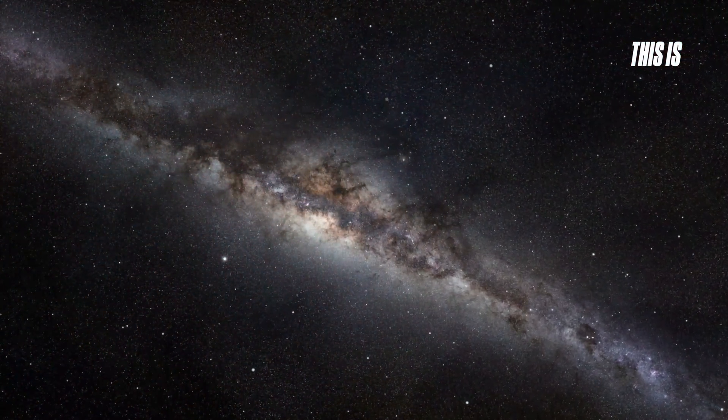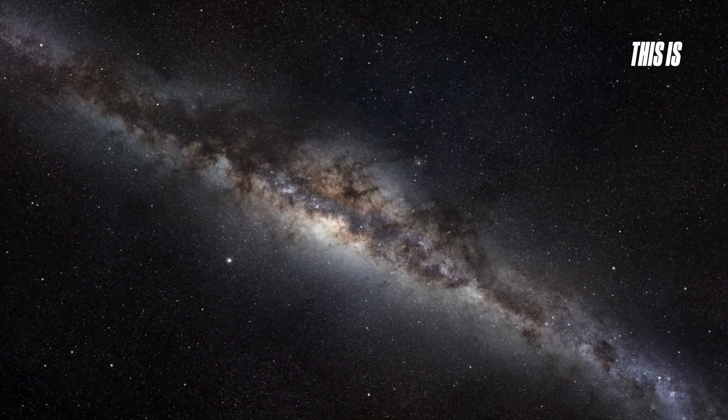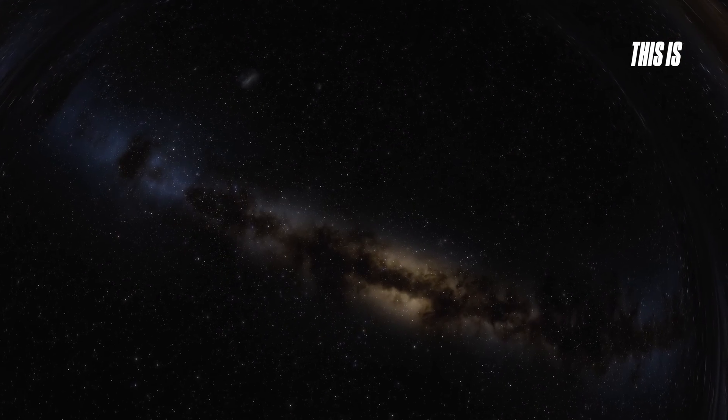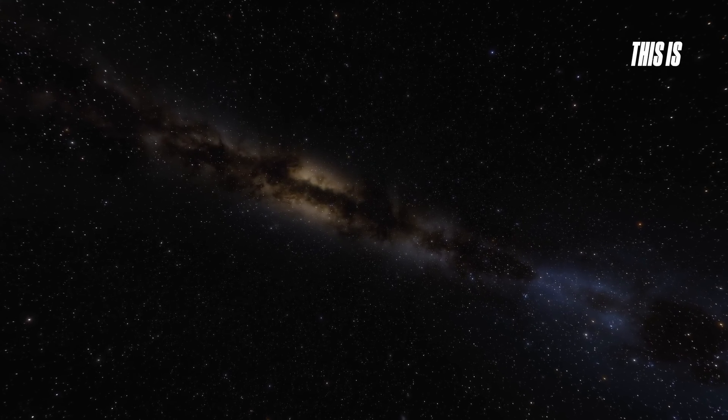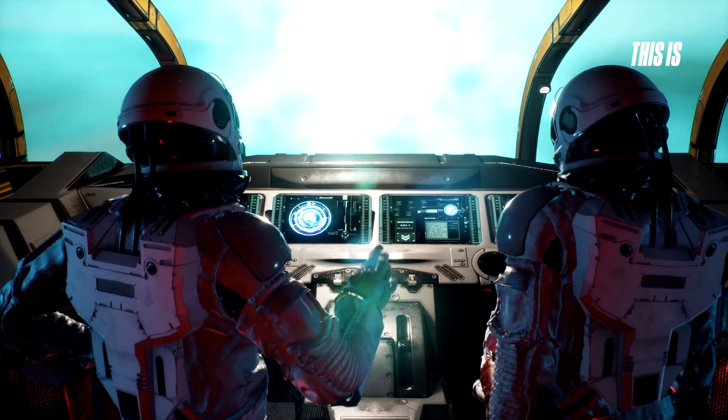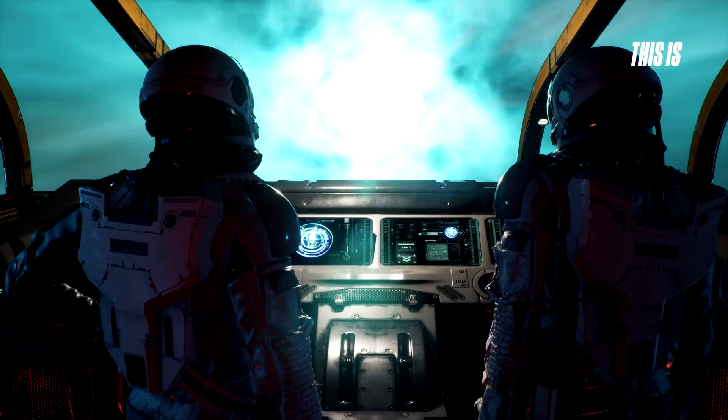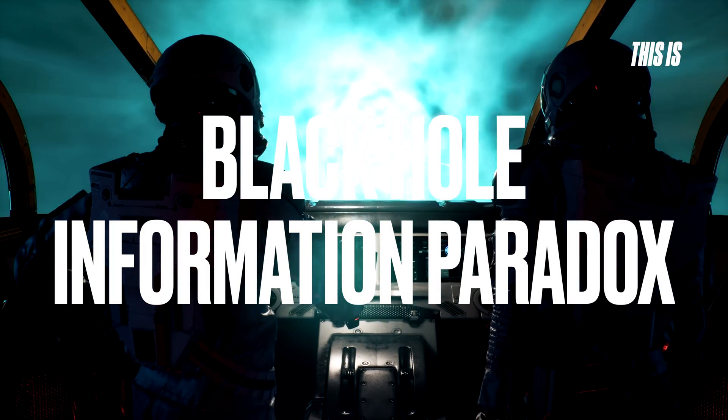However, if the black hole were supermassive, such as the one at the center of our galaxy, an object could theoretically cross the event horizon without being immediately destroyed. It would continue to fall toward the singularity, where reality behaves according to completely unknown physical laws. This leads to what physicists call the black hole information paradox.